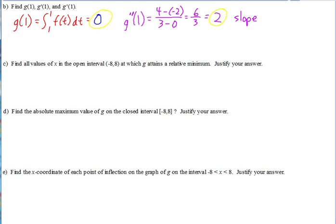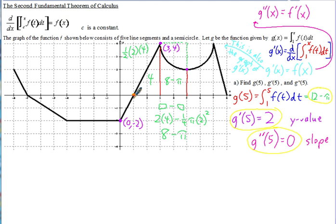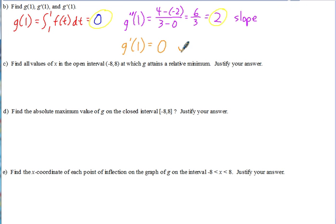For g'(1), since we have the graph of g prime, we just look at the y-value. At x = 1, the y-value is 0. So g'(1) = 0.